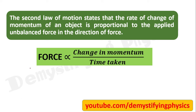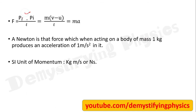In the previous video, I told you about Newton's Second Law of Motion: the rate of change of momentum is proportional to the applied force. We get the formula F = (pf - pi) / t. pf can be written as m×v and initial momentum as m×u. v minus u by t can be written as acceleration. These are the three forms of the formula used in numericals.